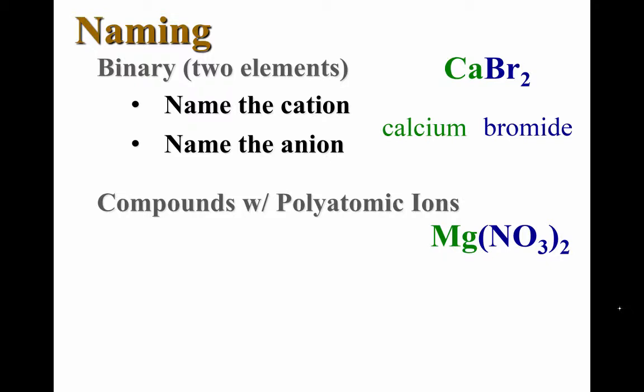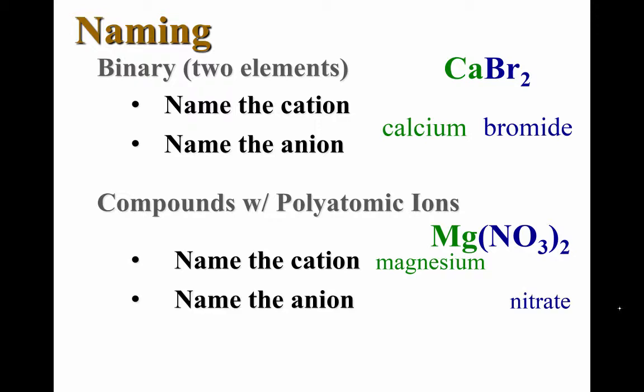The rules for naming these are the same. We're going to name the cation first, in this case it's called magnesium, and then we're going to follow that with the name of the anion. This anion is called nitrate. So the compound would be magnesium nitrate.